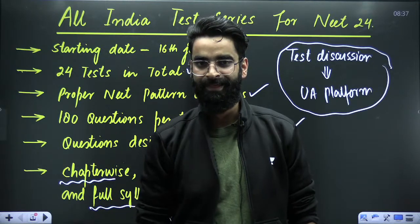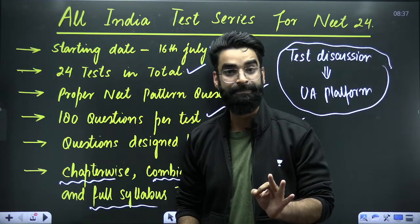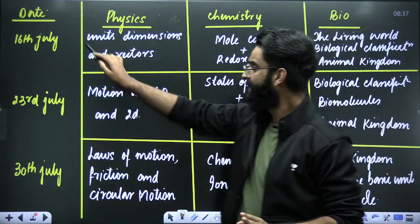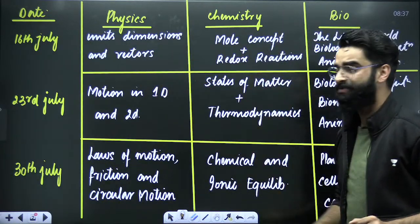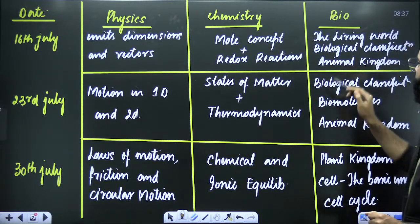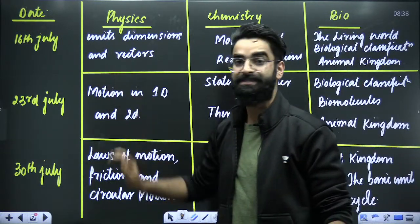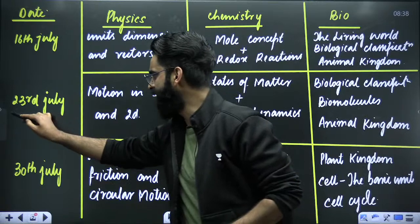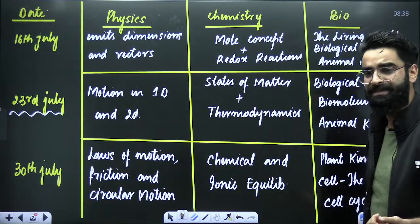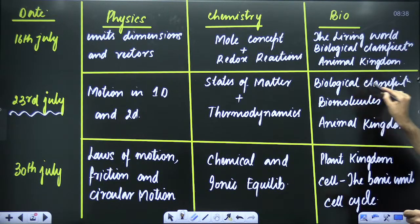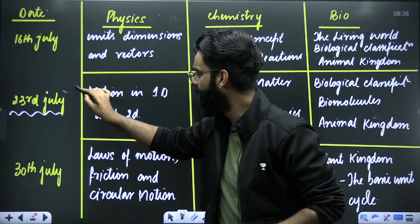Now majority of the students must be thinking about the syllabus. I'm going to give you the syllabus of the first six tests. The first test is on 16th of July. From physics, the syllabus is units, dimensions and vectors. From chemistry, it's mole concept and redox reactions. From biology, it's the living world, biological classification and animal kingdom. The second test is on 23rd of July. From physics, motion in 1D and motion in 2D. From chemistry, states of matter and thermodynamics. From biology, biological classification, biomolecules, and animal kingdom.